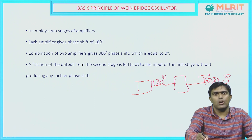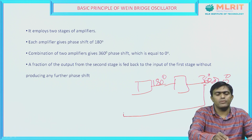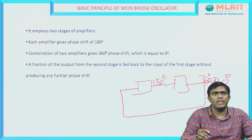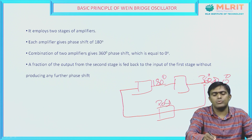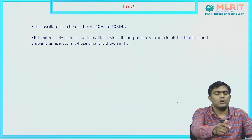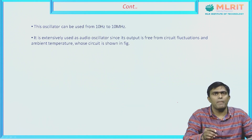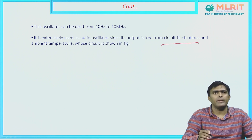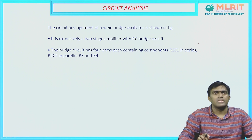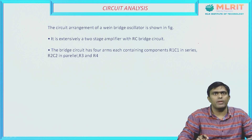A fraction of the output from the second stage is again given back to the input of the first stage without producing any further phase shift. This feedback is nothing but positive feedback, which we use in the oscillator. This oscillator can be used from a range of 10 Hz to a maximum of 10 MHz and it is mainly used as an audio oscillator since its output is free from circuit fluctuations and ambient temperature.